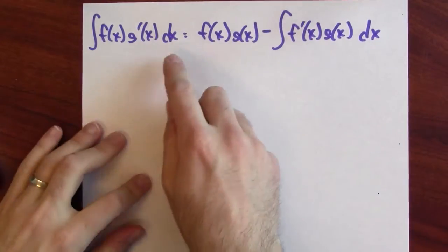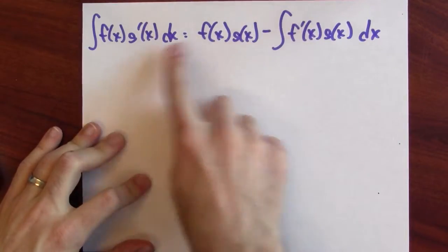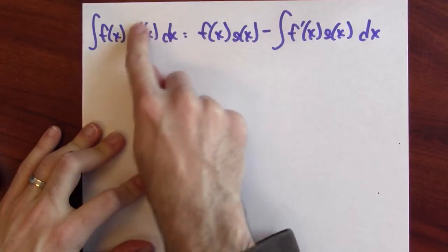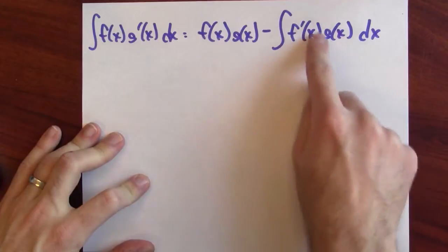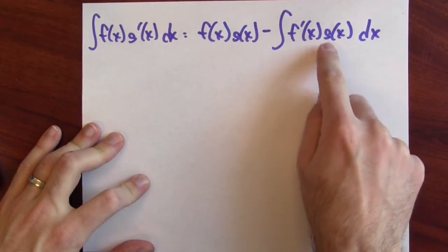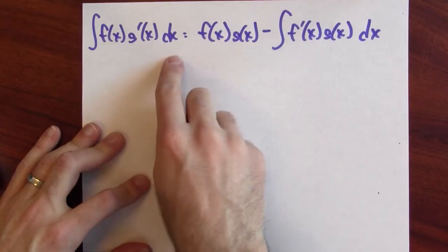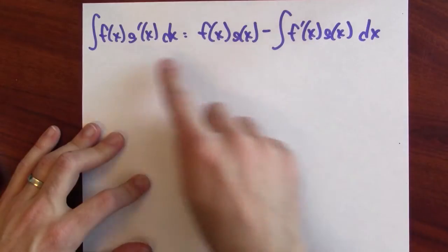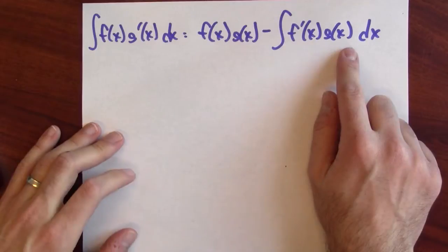Look at what this is saying: I can do this integration problem if I can do this other integration problem. How do these two differ? Here I've got a function times a derivative, and here I've got the derivative of f and an anti-derivative — g is an anti-derivative of g′. So I can replace one integration problem with another where I've differentiated part of the integrand and anti-differentiated another piece.